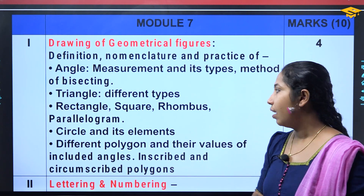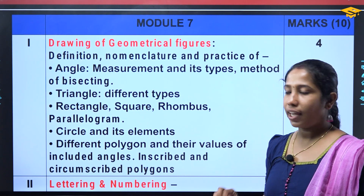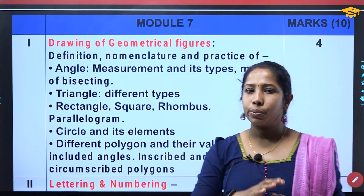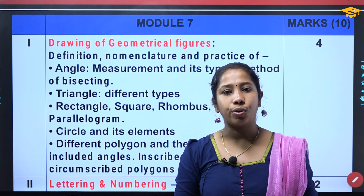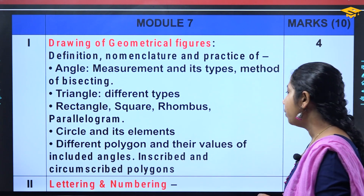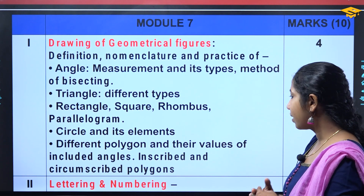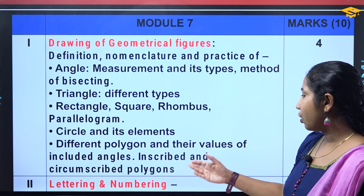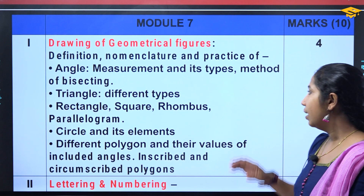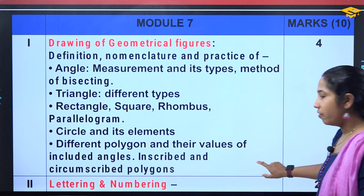Rhombus, parallelogram. Then the circle and its elements. The values of included angles. Inscribed and circumscribed polygons. This is very important. You can also get 4 marks weightage for this section.